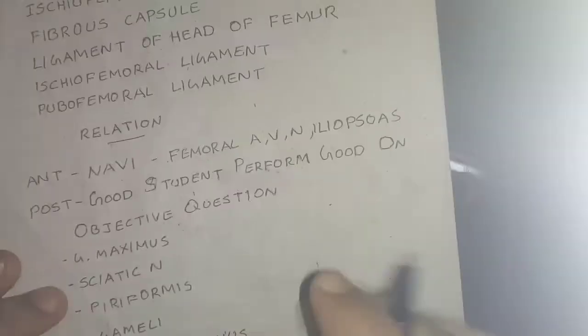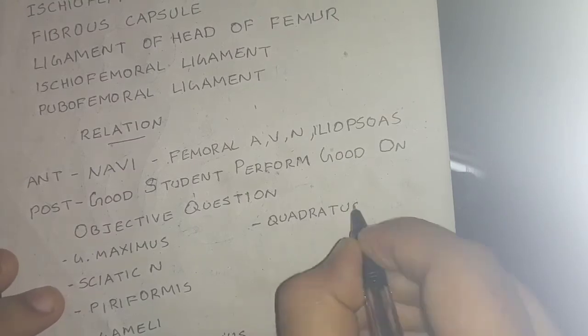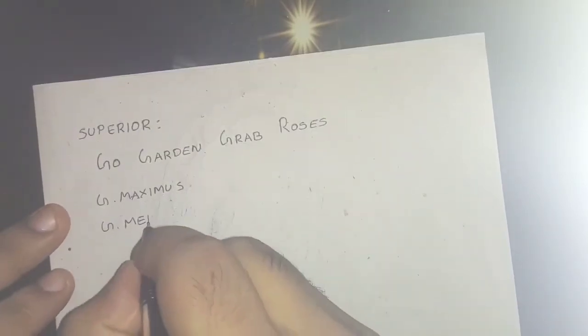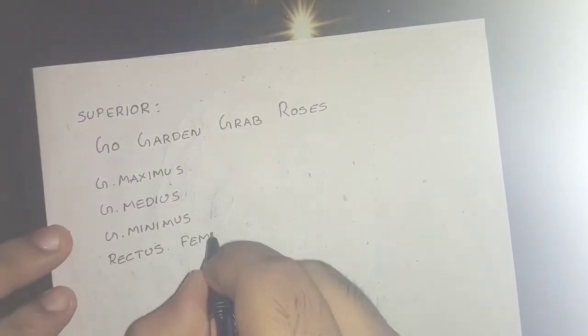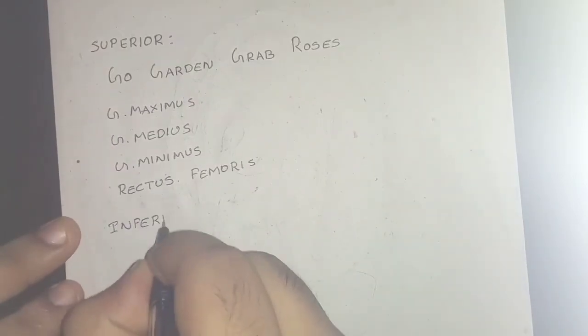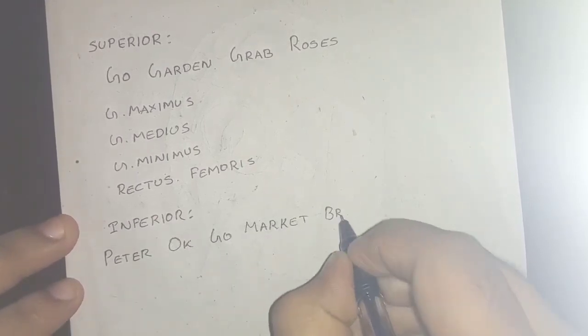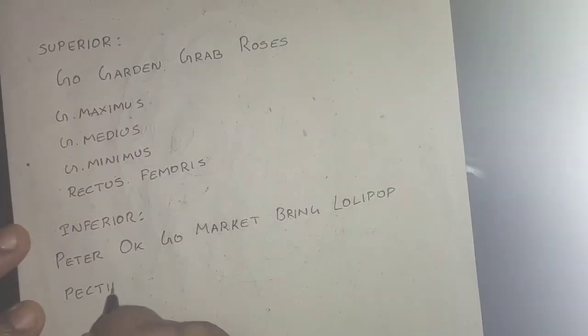Continuing posterior relations: obturator internus and quadratus femoris are the structures present posteriorly. For the superior relation, the mnemonic is 'Go Garden Grab Roses': gluteus maximus, gluteus medius, gluteus minimus, and rectus femoris.